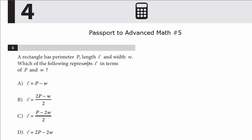We've seen this in previous questions. L in terms of P and W means we have to solve for L. We isolate that variable.